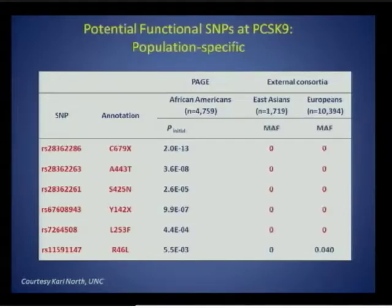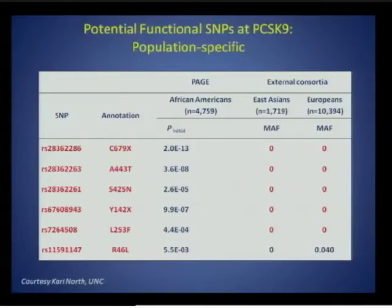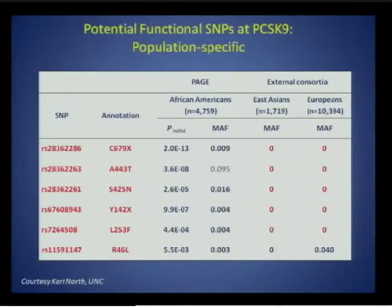Interestingly, looking in non-African-American populations, five of the six mutations are private to African Americans, with only one being seen in European Americans. Furthermore, all of these variants with the exception of one are rare, underscoring that these variants would not have been seen in GWAS of European ancestry populations.